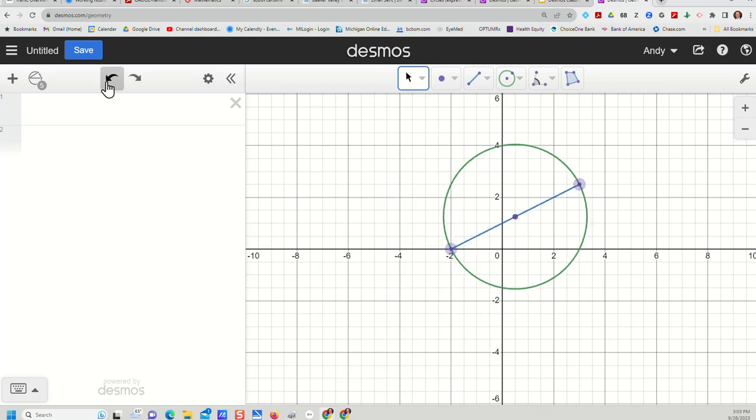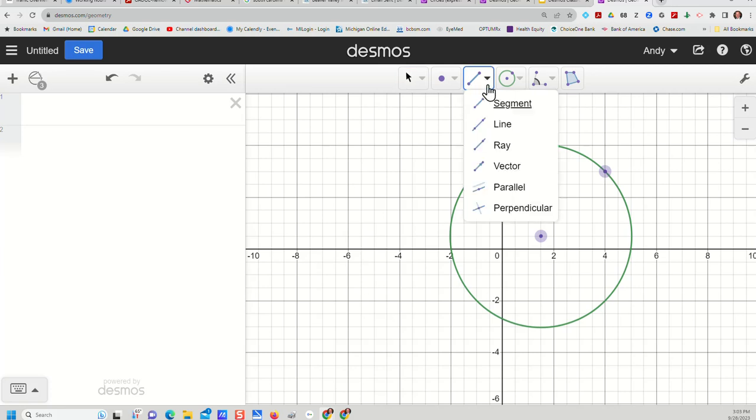Now I'm gonna go undo for a minute and go back to just creating a circle with a radius and I'm going to create a line segment for that radius and I'm going to create another line segment as another radius. So I've got two of them here.